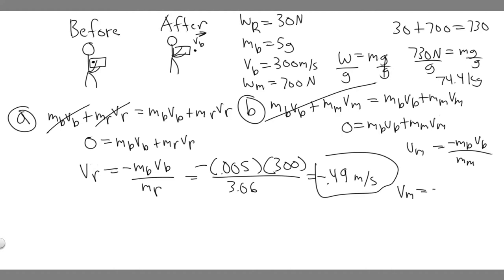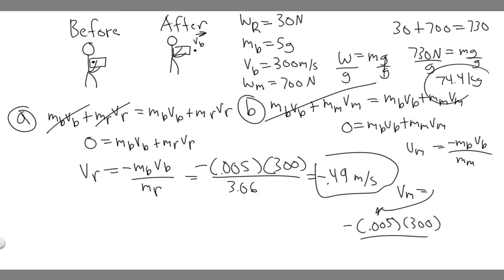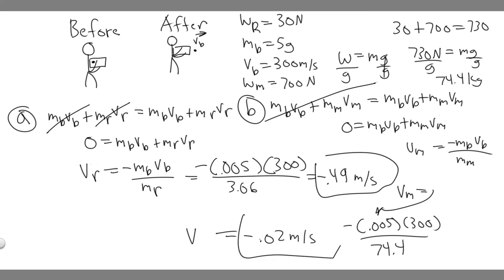So the velocity of the man and the rifle equals negative 0.005 times 300 divided by 74.4, which gives minus 0.02 meters per second. Both answers are negative because the system recoils backward. So the final answers are: Part A — minus 0.49 meters per second for the rifle alone, and Part B — minus 0.02 meters per second for the man and rifle together.